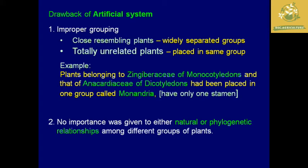The major drawback of the artificial system is improper grouping. Linnaeus grouped unrelated plants in the same group, and closely related plants in widely separated groups, because he only classified plants into 24 classes based on floral parts. For example, Zingiberaceae of monocotyledons and Anacardiaceae of dicotyledons were placed in the same group 'Monandria' because both have only one stamen. Additionally, his classification gave neither natural nor phylogenetic relationship among different groups of plants.